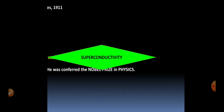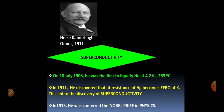Now what are superconductors? Kamerlingh Onnes, on 10th July 1908, was successful in liquefying helium at a very low temperature of 4.2 Kelvin. And in 1911, he discovered that the resistance of mercury becomes zero at 4.2 Kelvin. This led to the discovery of the concept of superconductivity, and in 1913 he was conferred the Nobel Prize in Physics for it.